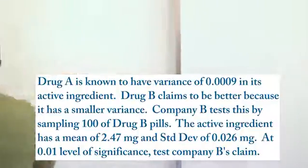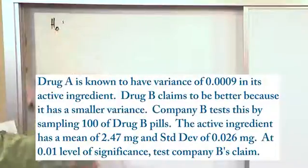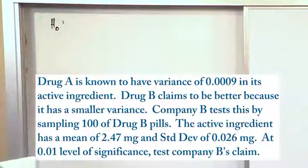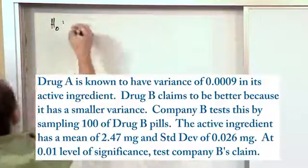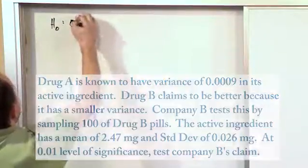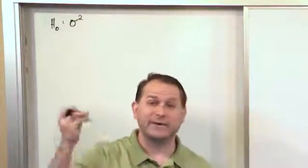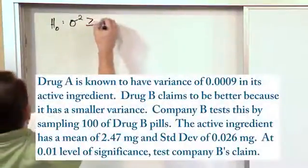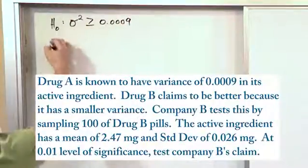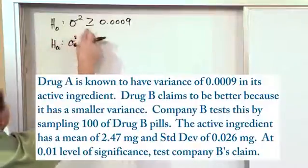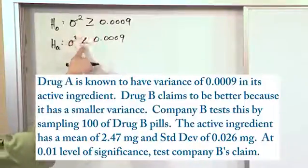The first part we always do is write down the hypothesis. The null hypothesis talks about Drug A — this is a little different than what we've done before. You're comparing two drugs, but Drug A has a variance of 0.0009. Remember, variance is sigma squared, so you have to write sigma squared — that's how you write variance. We write sigma squared greater than or equal to 0.0009 for the null hypothesis. For the alternate hypothesis, sigma squared must be less than 0.0009. Sometimes it's hard to figure out which direction the arrow should point.